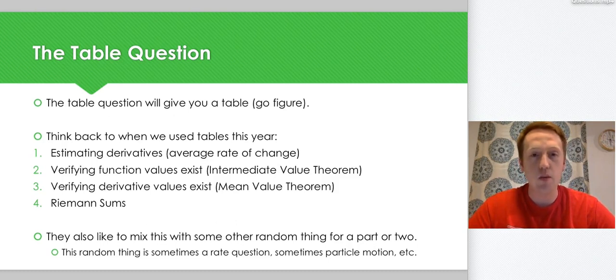Lots of Riemann sums. Pretty much guarantee a Riemann sum when you see a table of values. They also like to mix some random thing with it. So you may see elements of a rate question, particle motion question or something like that.